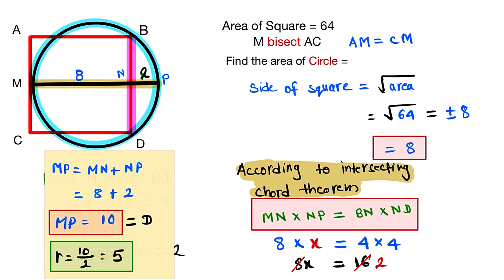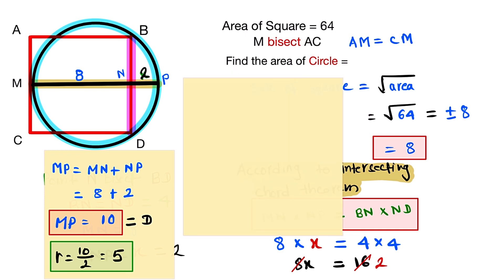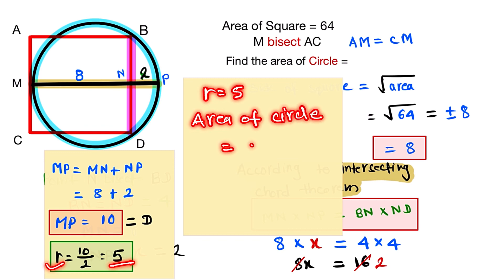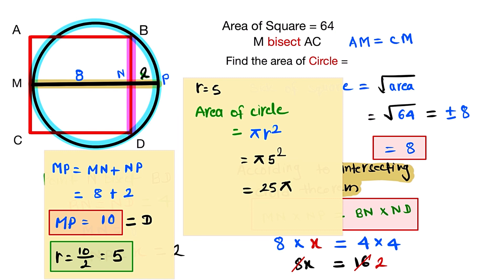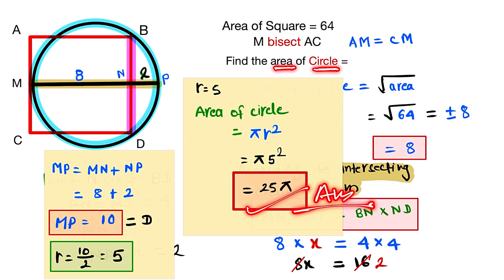Now we can easily find the area of the circle. The area of the circle is given by pi r squared. We put the value of r as 5: pi times 5 squared equals 25 pi. And 25 pi is our final answer. The area of the circle is 25 pi.